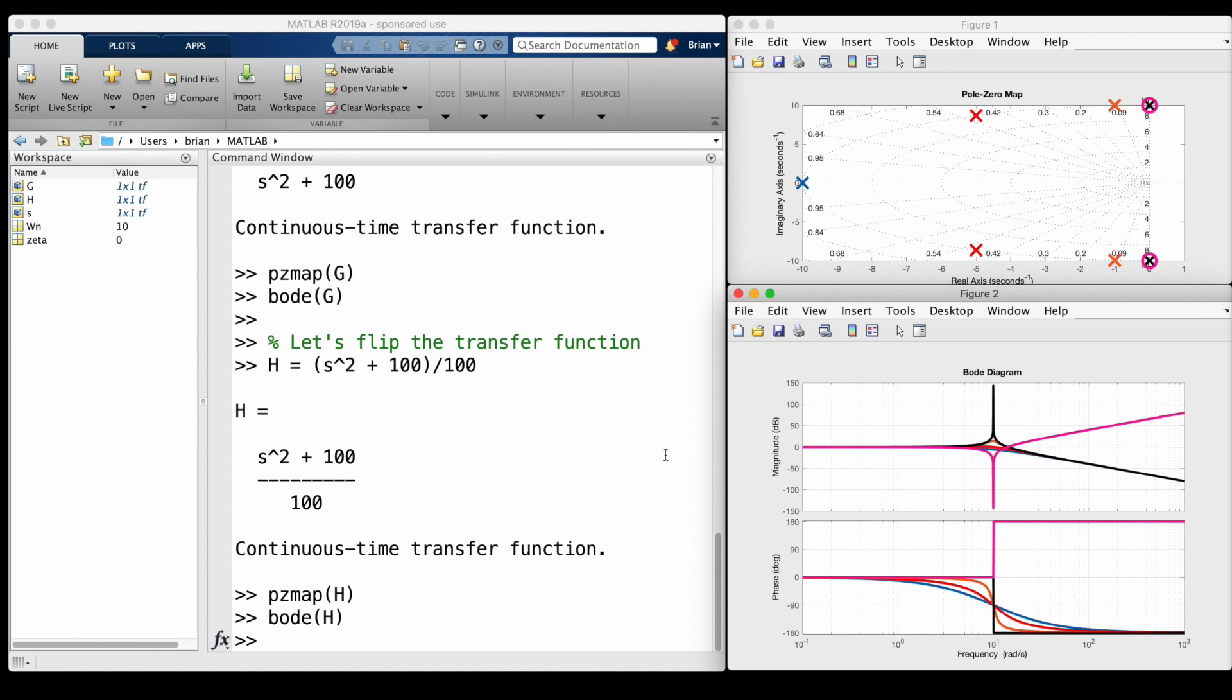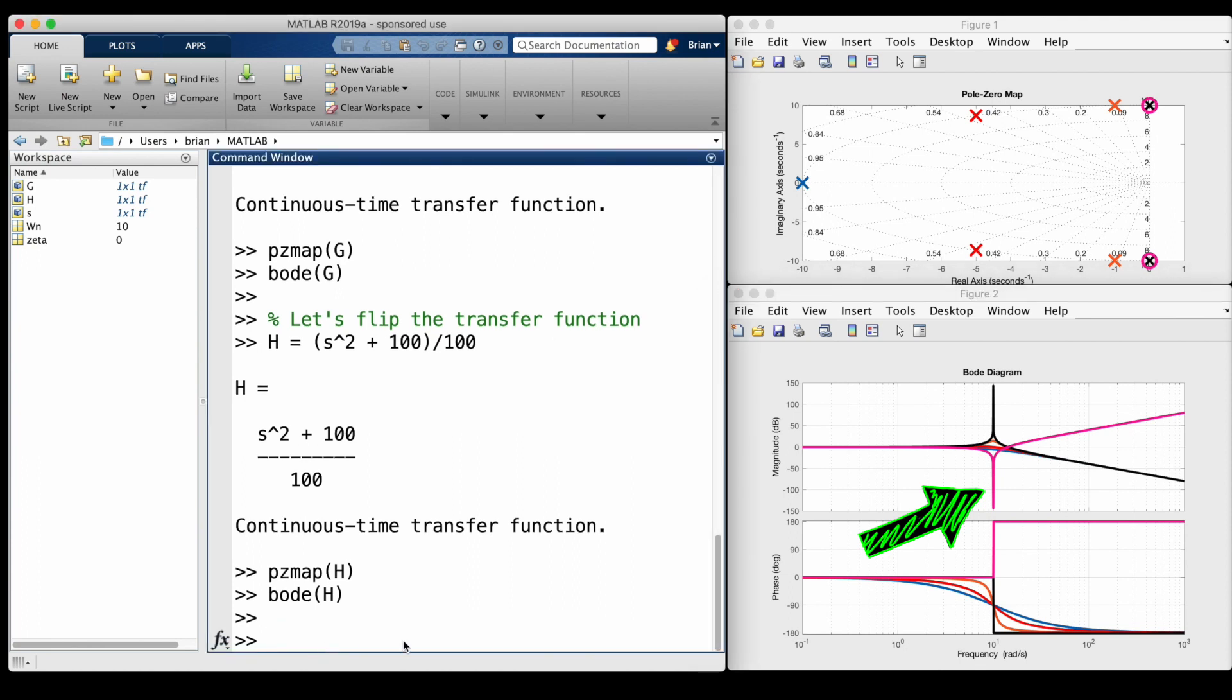And look at that. Instead of creating a huge amount of gain at the natural frequency, we now have a system that almost completely attenuates it. And that's pretty much what we want in a notch filter.